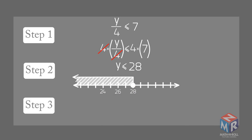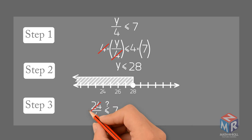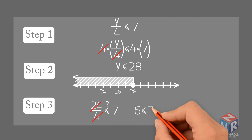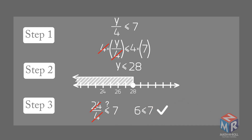Step 3: Check the solution. Substitute a solution from the shaded part of your number line into the original inequality. I chose 24 because it is easily divisible by 4. Substitute 24 for y into y over 4 is less than or equal to 7. 24 over 4 is less than or equal to 7, and 6 is less than or equal to 7. The inequality is true.